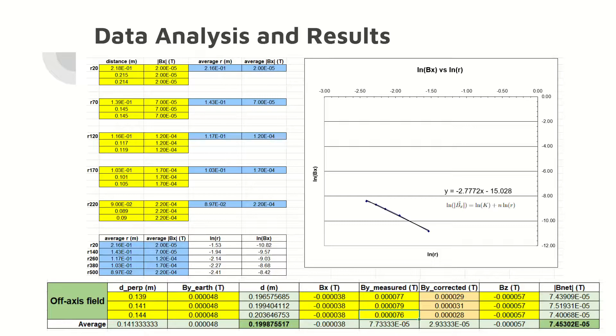Here are the results of the experimental portion of the lab. Note the line of regression and the decreasing distance between the magnet and the magnetometer as the magnetic field increases. Also, note the off-axis magnetic field measurements at the bottom of the slide.